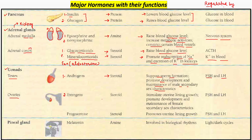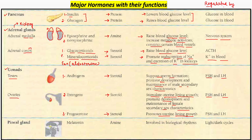Ovaries ke baare mein baat karo to estrogen is the one jo yahan se release ho raha hai, jo ki again steroid hai. Estrogen female sexual characteristics ko stimulate aur promote karta hai. Follicle stimulating hormone aur luteinizing hormone hai jo is cheez ko regulate kar raha hai — kitna aur kab kya level estrogen ka rahega. Third most important hormone is progesterone — that is again steroid in nature — jo ki uterine lining growth ko support karne ke liye, pregnancy support karne ko after conceiving help karta hai, and again FSH and LH ki maatra jo hai isko regulate karti hai.